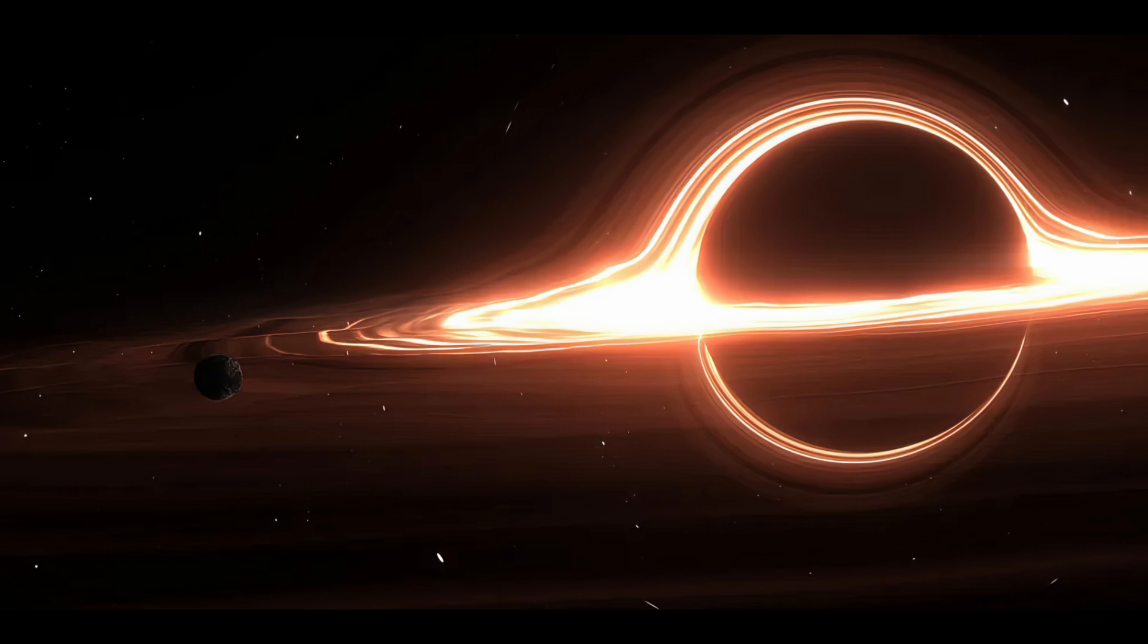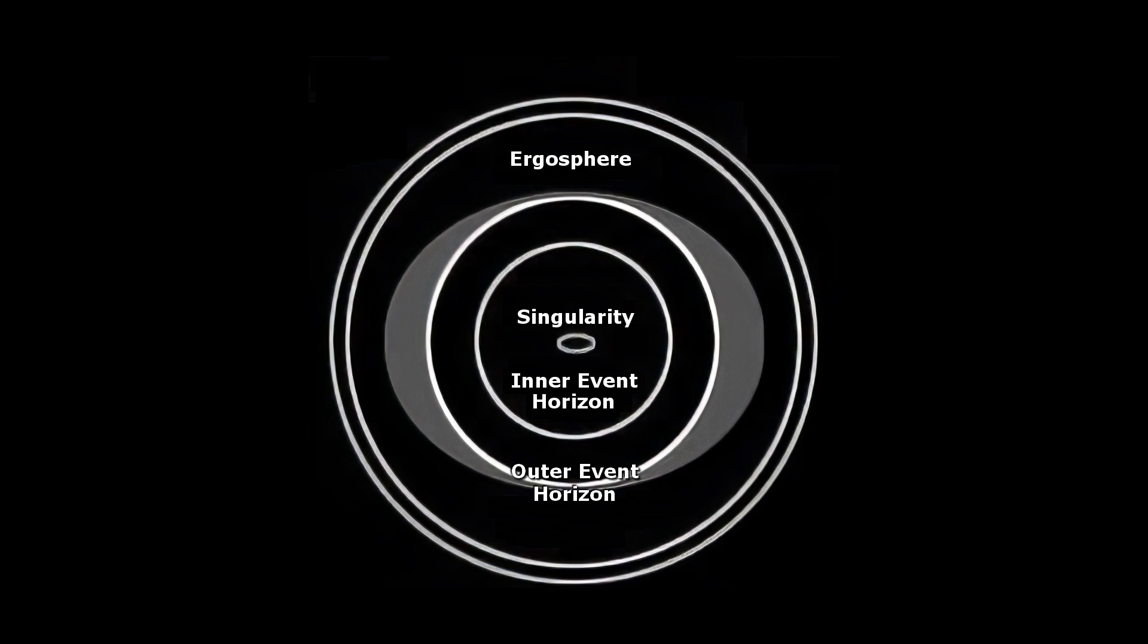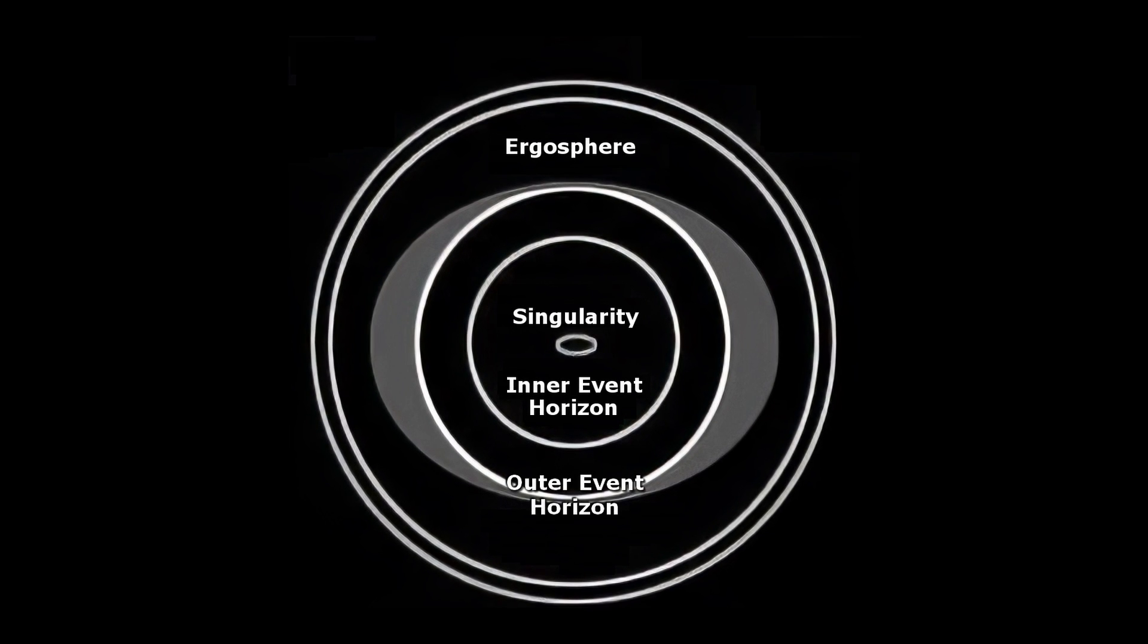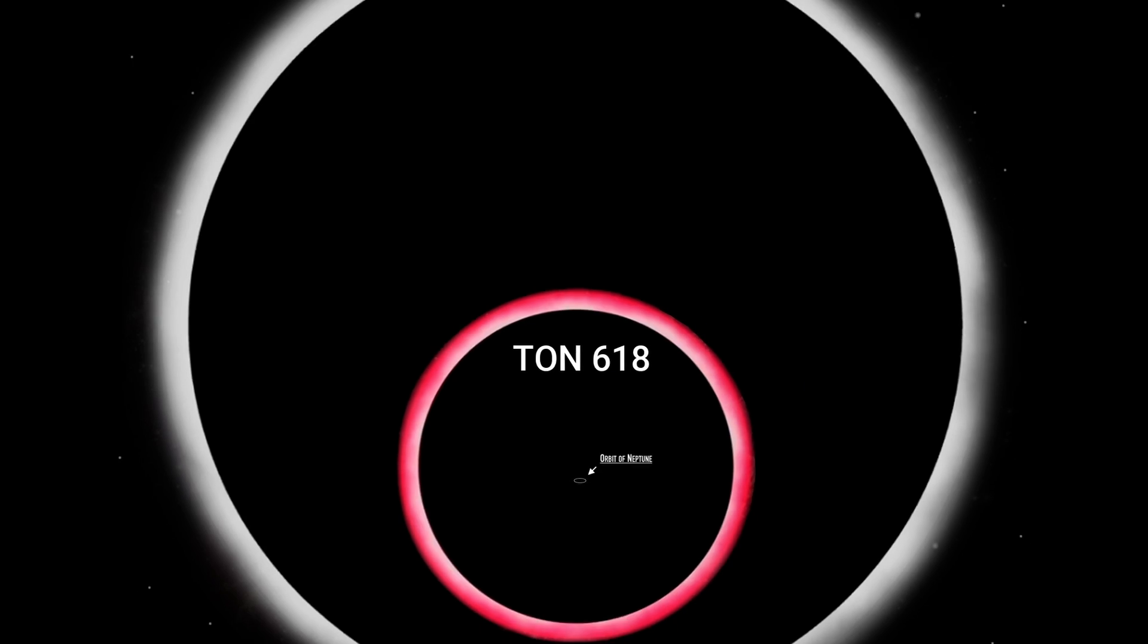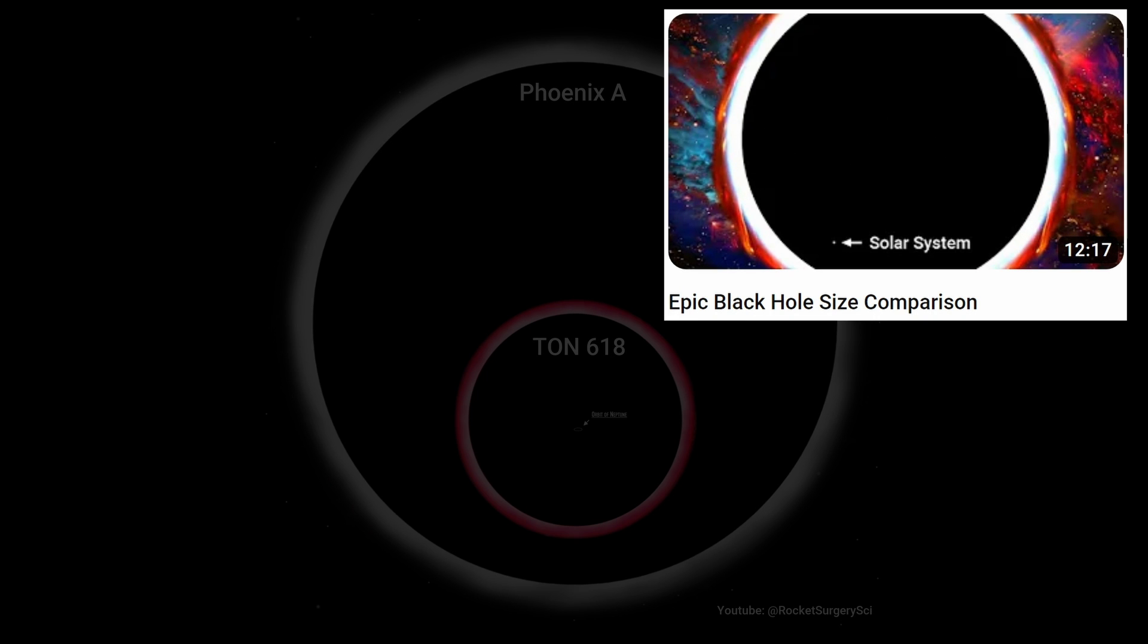When we talk about the size of a black hole, we're really talking about the size of its event horizon. That's what we see from the outside. Black holes come in a wide range of sizes, from hypothetical specks, too small to even see, up to the largest yet recorded 100 billion times the mass of the sun.